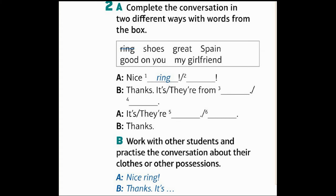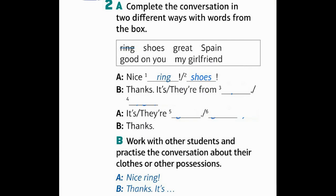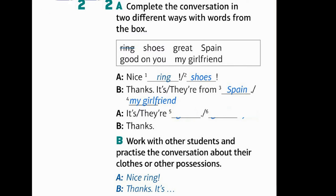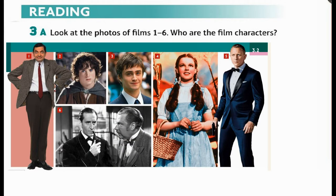Ring, shoes, great, Spain, good on you. A: Nice shoes! B: Thanks, they're from Spain. My girlfriend gave them to me. A: It's a great ring — good on you! B: Thanks. Work with other students and practice the conversation about their clothes or other possessions. A: Nice ring! B: Thanks, it's from Spain.